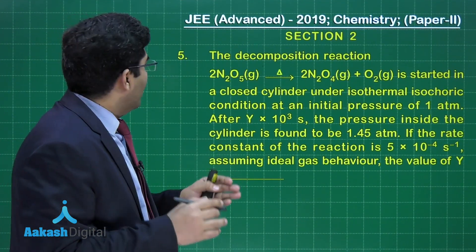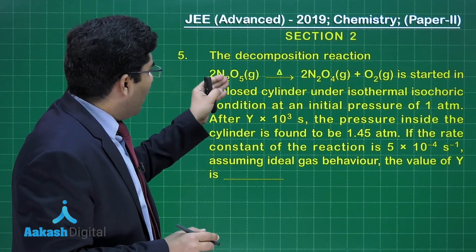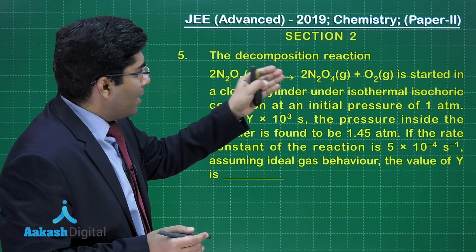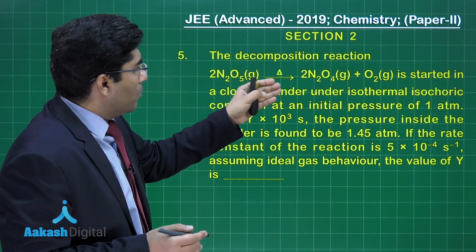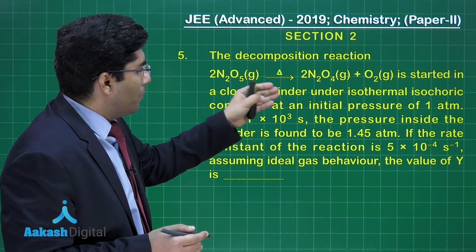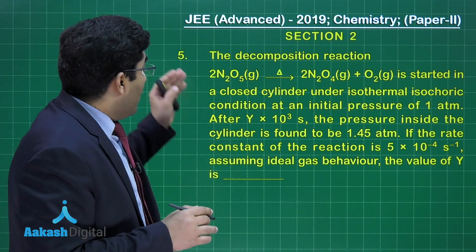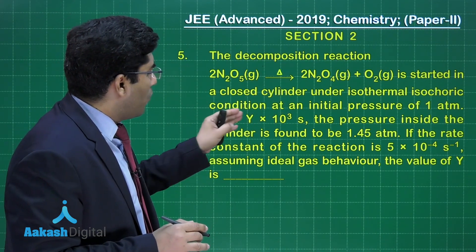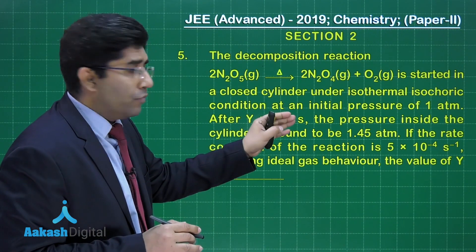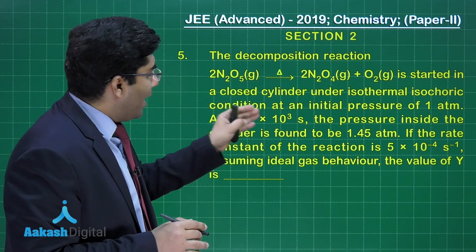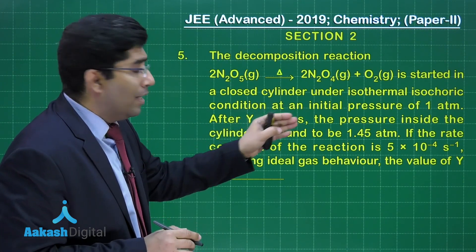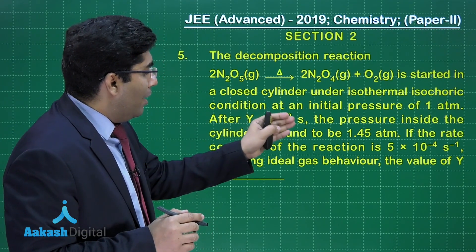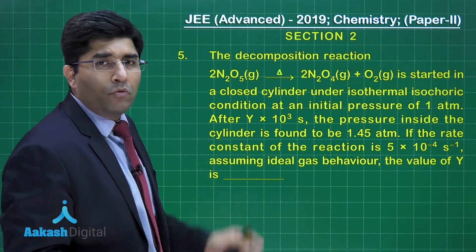In this question, he is asking: the decomposition reaction 2N₂O₅ on heating decomposing to 2N₂O₄ plus O₂ is started in a closed cylinder under isothermal isochoric conditions at an initial pressure of 1 atmosphere. After Y × 10³ seconds, the pressure inside the cylinder is found to be 1.45 atmosphere. If the rate constant of the reaction is 5 × 10⁻⁴ per second — meaning it is a first-order reaction — assuming ideal gas behavior, the value of Y is what we have to find out.